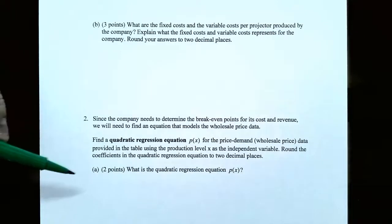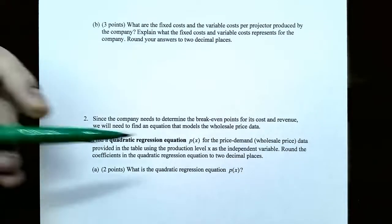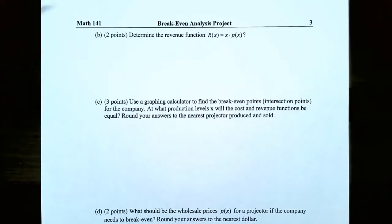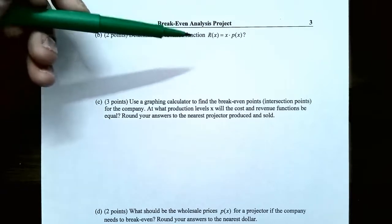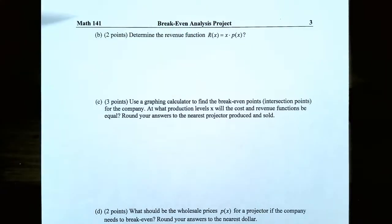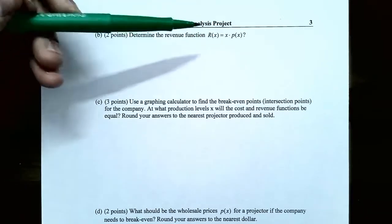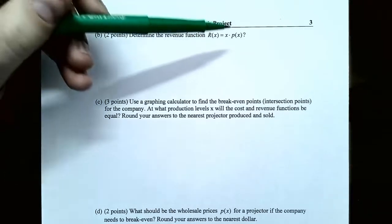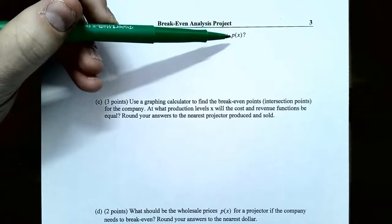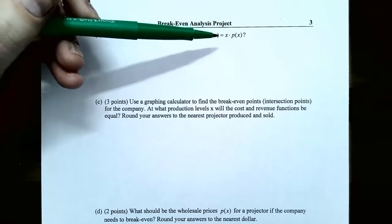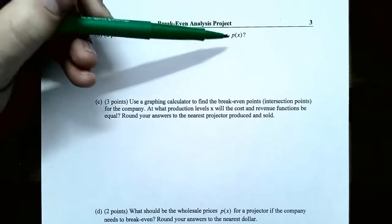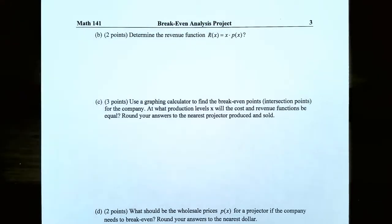That's the answer to part A — the quadratic regression equation lowercase p of x. Now for part B: determine the revenue function R of x = x times p of x. If you remember from earlier in the semester, we defined revenue as price times quantity. The price is the wholesale price, lowercase p of x. The x stands for the quantity — the production level of the projectors. So revenue is x times p of x. Once you have the wholesale price from the previous part, you can find the revenue function.